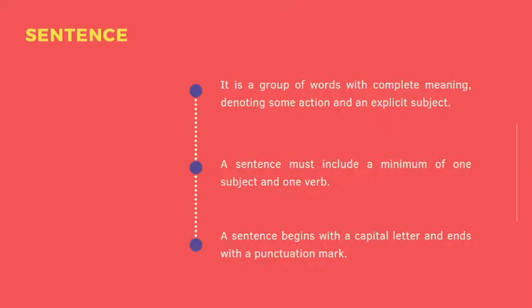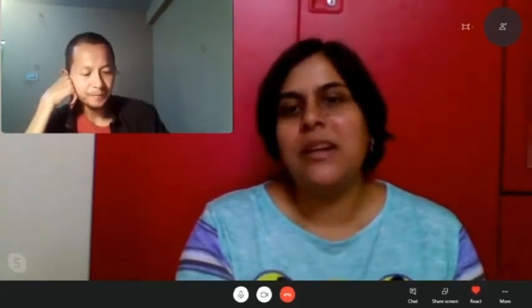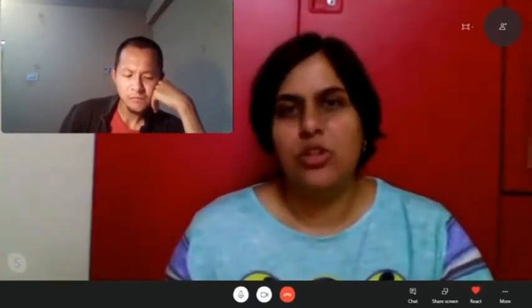A sentence is a group of words which has complete meaning. It shows some action and there is an explicit subject. One common mistake we make from a grammar angle is that we don't start a sentence with a capital letter, or we don't end it with a punctuation mark — full stop, exclamation mark, question mark. Comma and semi-colon are also punctuation marks, but those are not placed at the end of a sentence.